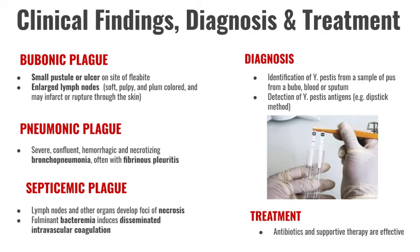Clinically, we would see a pustule or ulcer on the site of the flea bite and enlarged lymph nodes, which are plum-colored and may infarct or rupture to the skin. In pneumonic plague, you would see hemorrhagic and necrotizing bronchopneumonia. And for septicemic plague, there would be bacteremia and induction of DIC.